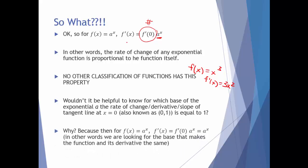Why are we interested in knowing that? Because if we knew which base causes the derivative at 0 to equal 1, that would tell us for which function the derivative equals the function itself — because that f prime of 0 factor would turn into 1. We're looking for the base that makes the function and its derivative exactly the same.